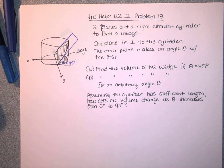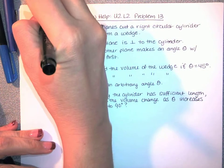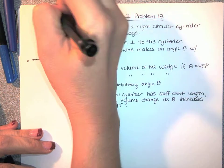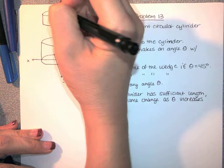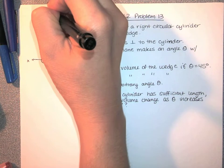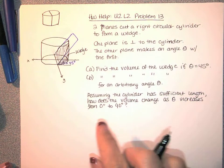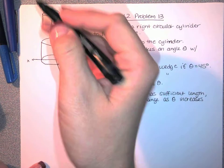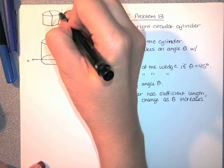One plane is perpendicular to the cylinder, so basically what that first plane is doing is taking our cylinder and cutting it in half. The first plane says let's take half of this. And then the second plane makes an angle with the first, so one plane is cutting it in half and then the second plane intersects like this.